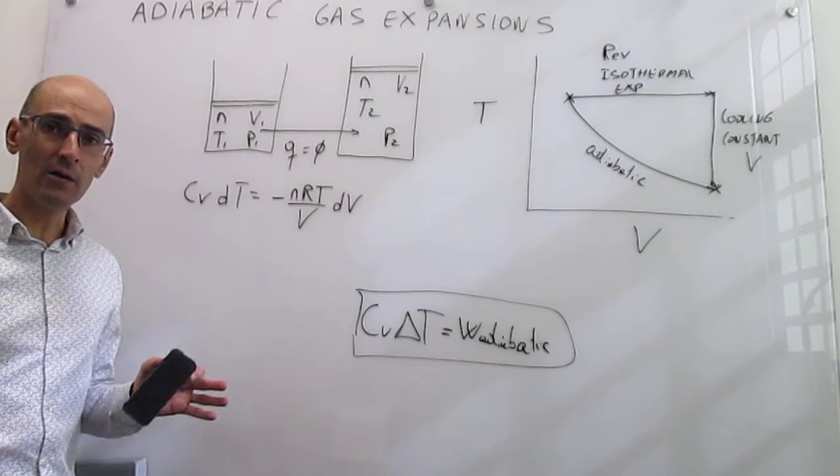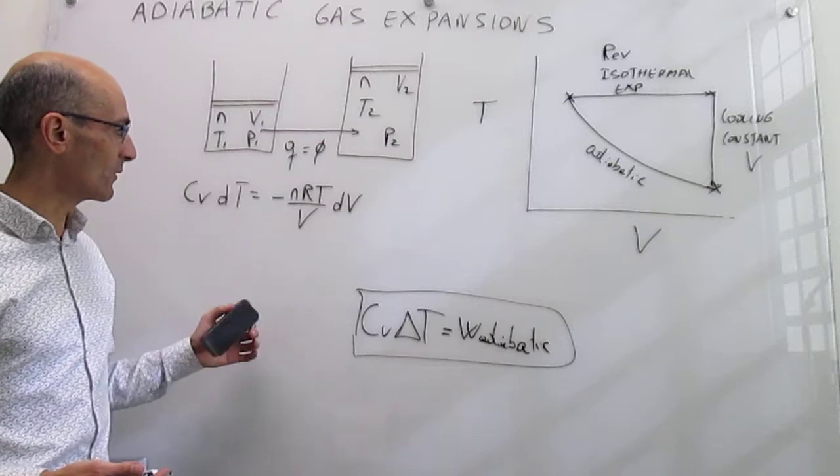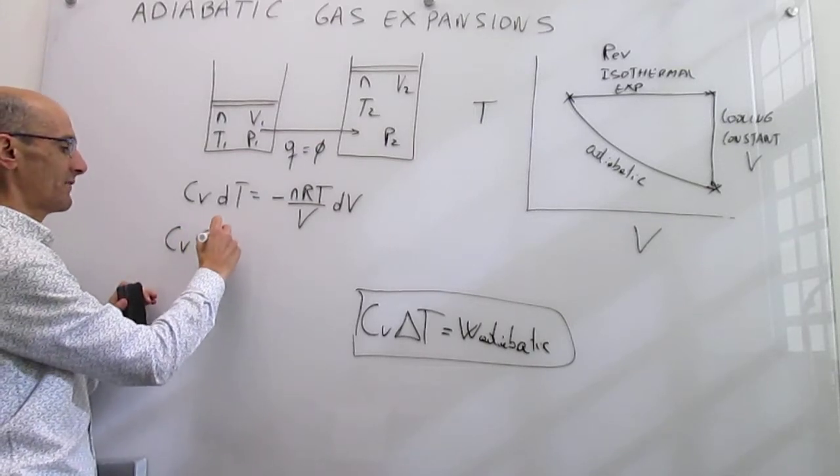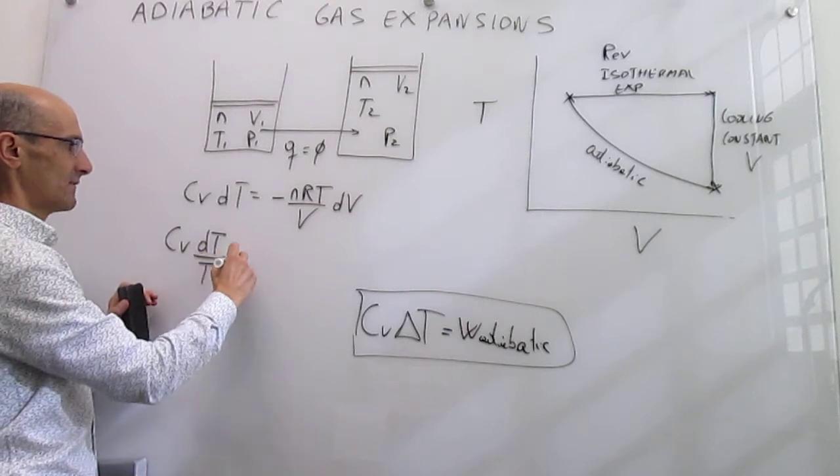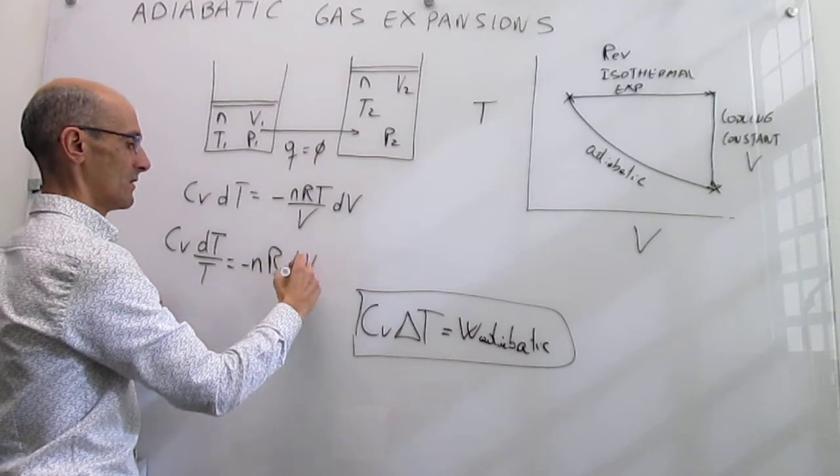So this is going to set up a nice integration that we can try to see by consolidating variables here. So let's get the temperature on the left-hand side, and then let's get the volumes on the right-hand side, differential V over V.